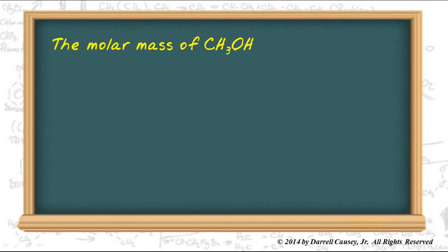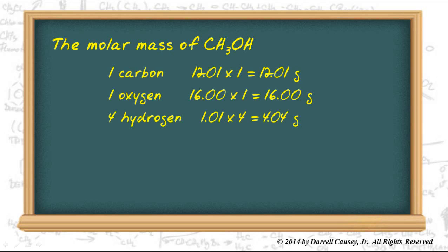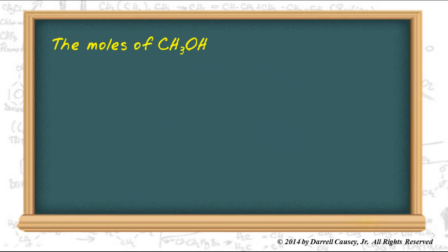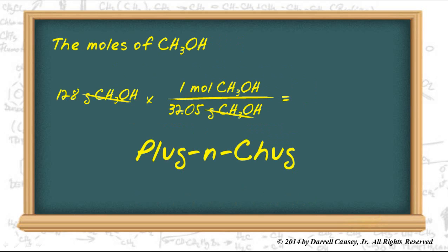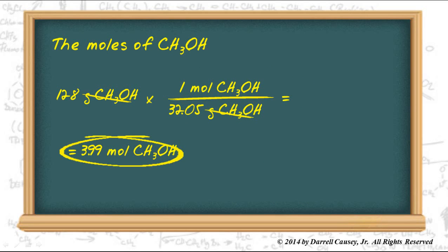The molar mass of methanol is determined by taking one carbon, one oxygen, and four hydrogen and adding them all up, and we get 32.05 grams. The moles of methanol can be determined by taking the grams and multiplying it to the molar mass. Grams will cancel out. We can plug and chug and that means put it in the calculator, and we'll get 3.99 moles of methanol with 3 sig figs.